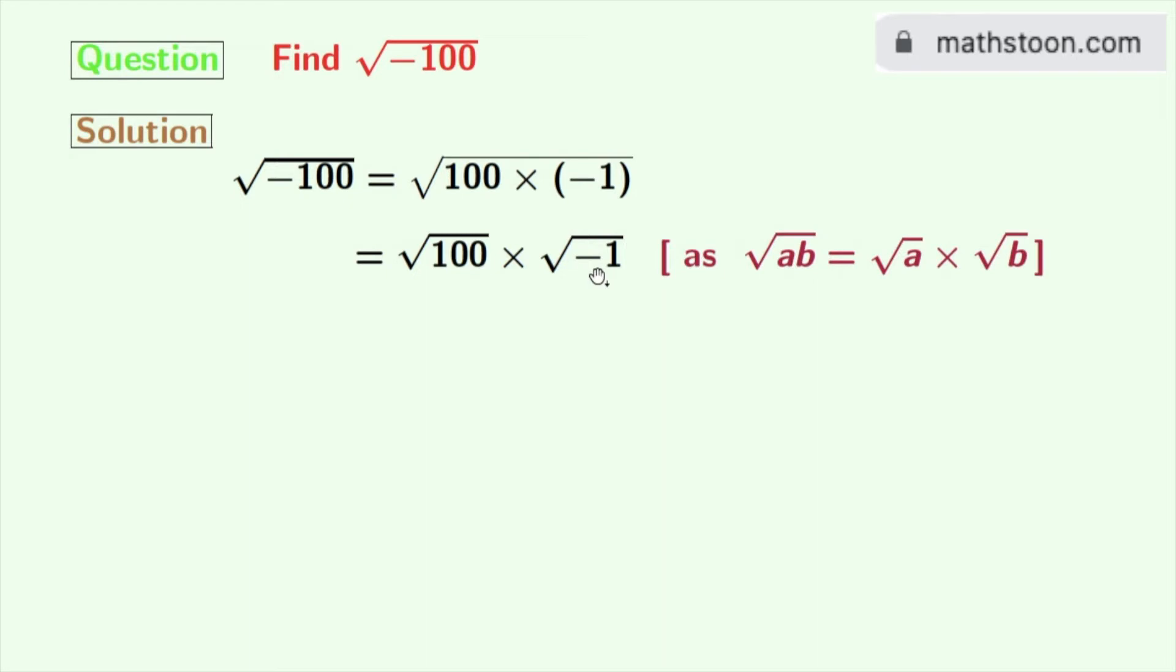Using the rule of square root of ab is equal to square root of a times square root of b, here a is 100 and b is minus 1.